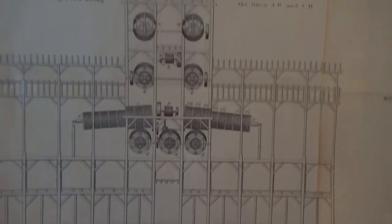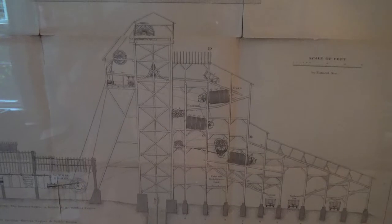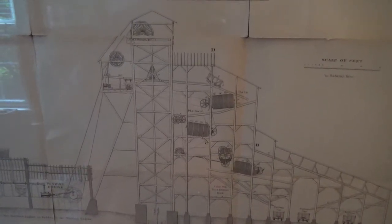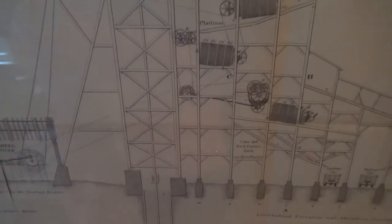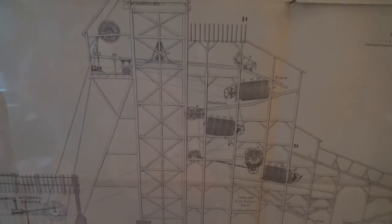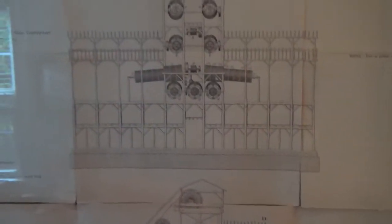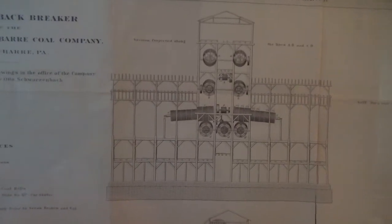Yeah, the Hollenbeck and a whole array of collieries used this efficient-for-them system of building the processing plant and the shaft as one unit right over the mine entrance. That's why in later years you saw shafts being more solitary, away from the breaker itself.